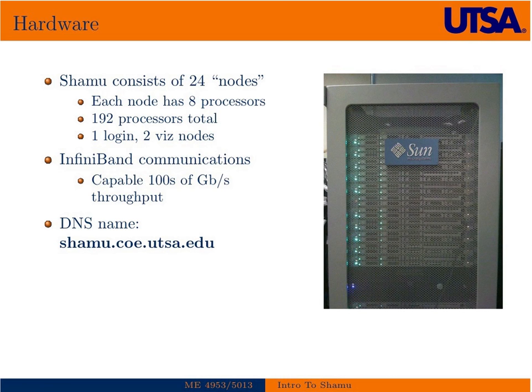Shamu is a Sun Linux cluster here on campus. It consists of 24 nodes — you can think of a node as a rack blade in a computer. Each node has eight processors, so there's a total of 192. We have one login node, two visualization nodes that have graphics processing units connected to them for GPU computing and visualization purposes, and all the rest are dedicated strictly to computing — number crunching.